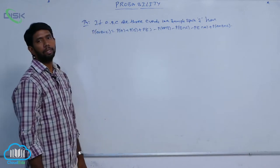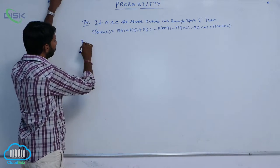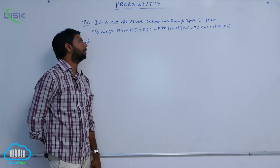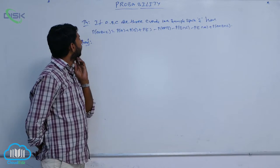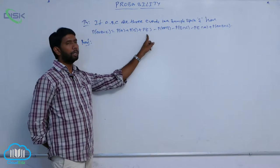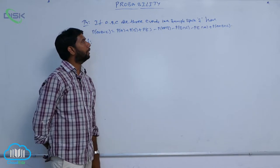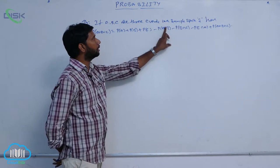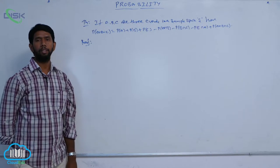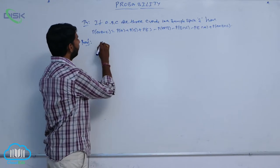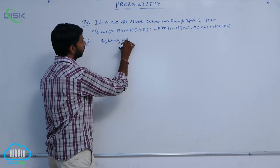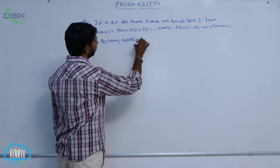Now go to its proof. Given A, B, C are three events in a sample space, then prove that P of A union B union C is equal to P of A plus P of B plus P of C minus P of A intersection B minus P of B intersection C minus P of C intersection A plus P of A intersection B intersection C, by using addition theorem.